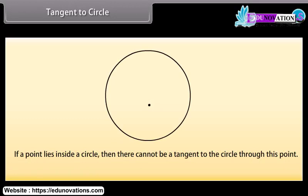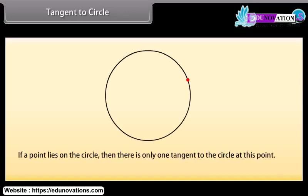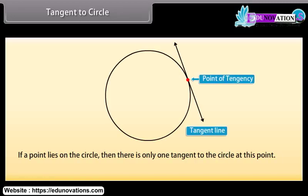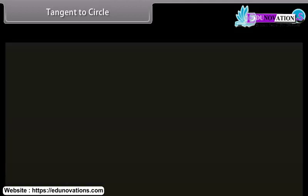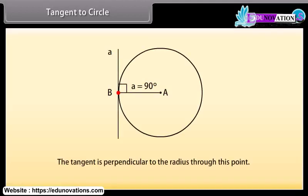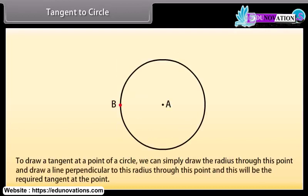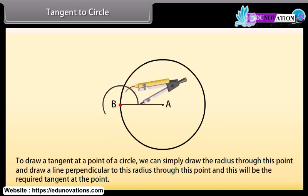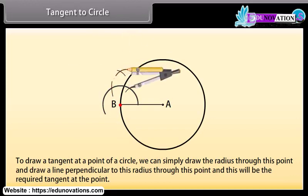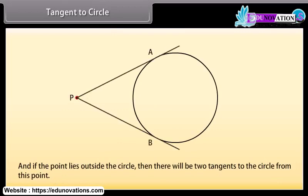We know that if a point lies inside a circle, then there cannot be a tangent to the circle through this point. If a point lies on the circle, then there is only one tangent to the circle at this point, and the tangent is perpendicular to the radius through this point. Therefore, to draw a tangent at a point of a circle, we simply draw the radius through this point and then draw a line perpendicular to this radius — that will be the required tangent. If the point lies outside the circle, then there will be two tangents to the circle from this point.